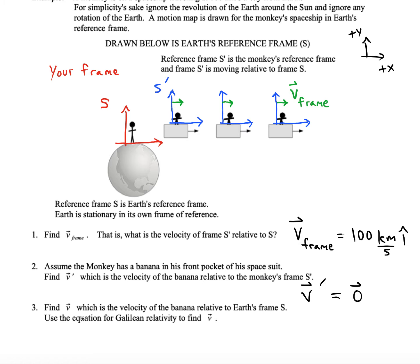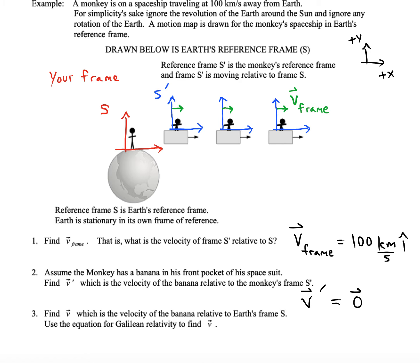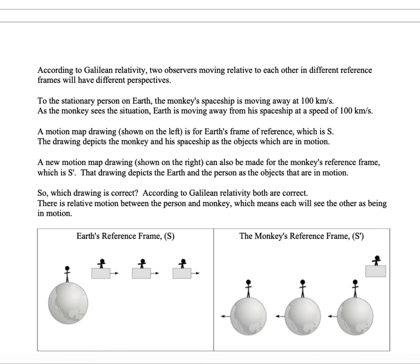But now we find a different velocity, and it's just called V. And this is the velocity of the banana relative to Earth's reference frame, S. All right, so we said that the monkey was moving, and the banana is moving, too, relative to you on Earth. And so for that, we would say that V is 100 kilometers per second. It matches the V-frame.